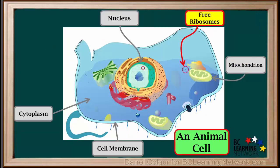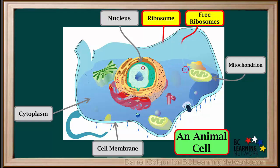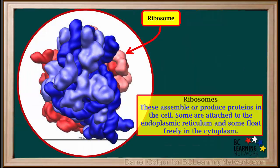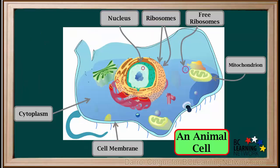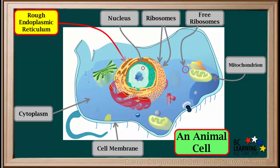Ribosomes can either be floating freely in the cytoplasm, or attached to an organelle called the endoplasmic reticulum. Ribosomes are shown as small dots on the animal cell diagram. Ribosomes are organelles that assemble or produce molecules called proteins in the cell. The rough endoplasmic reticulum surrounds the nucleus, and its surface is covered with ribosomes, shown as dots in this diagram. These ribosomes make the surface rough.